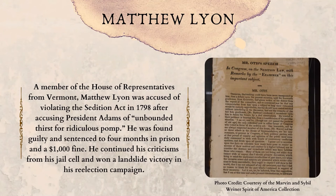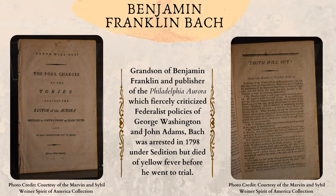Matthew Lyon. A member of the House of Representatives from Vermont, Matthew Lyon was accused of violating the Sedition Act in 1798 after accusing President Adams of, quote, "unbounded thirst for ridiculous pomp," end quote. He was found guilty and sentenced to four months in prison and a $1,000 fine. He continued his criticisms from his jail cell and won a landslide victory in his re-election campaign. Benjamin Franklin Bache, grandson of Benjamin Franklin and publisher of the Philadelphia Aurora, which fiercely criticized Federalist policies of George Washington and John Adams, was arrested in 1798 under sedition, but died of yellow fever before he went to trial.